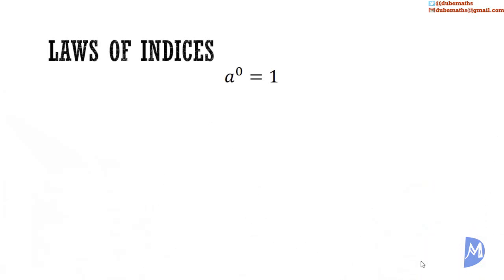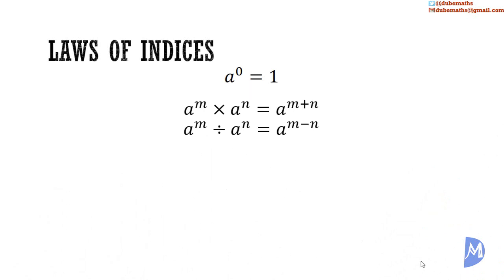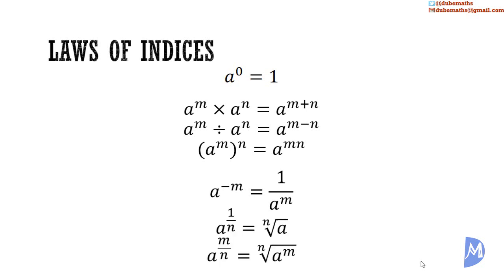In summary: any quantity raised to a power of 0 is 1. When we multiply quantities with the same base, we add their indices. When we divide quantities with the same base, we subtract the denominator index from the numerator index. When a quantity raised to a power is raised to another power, we multiply the indices. A negative index indicates the reciprocal of a quantity. And in a fractional index, the numerator indicates the power and the denominator indicates the root.